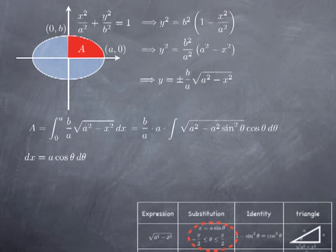When x varies from 0 to a, since x = a·sin(θ), when θ = 0 we get x = a·sin(0) = 0. As θ increases to π/2, x becomes a·sin(π/2) = a. So x takes all values from 0 to a as θ increases from 0 to π/2. Therefore the bounds of integration in terms of θ are from 0 to π/2.